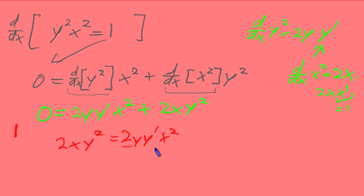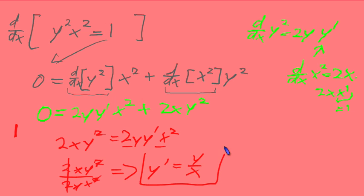2xy squared equals 2y y prime x squared. And dividing this term through is going to give us 2xy squared over 2y x squared. We get to cancel a couple terms here. And what we get is y prime equals y over x. A little bit interesting about that. We have a derivative that is dependent on the original function.